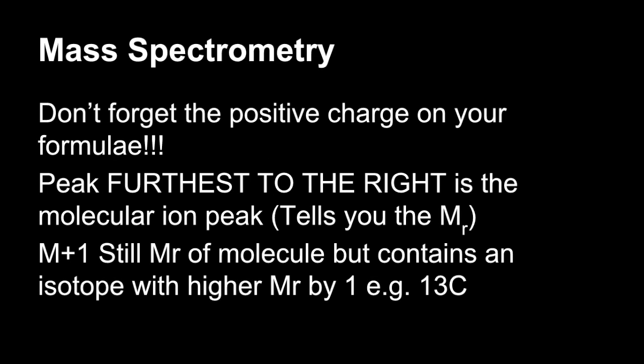Mass spec. Don't forget the positive charge on the formulae of all the species giving those peaks. And the peak furthest to the right is the molecular ion peak. That tells you the MR. If you've got a tiny little N plus 1 peak, that's still the MR of the molecule, but it's being caused by the molecule containing an isotope with an MR higher by 1. So carbon-13 is an example there.